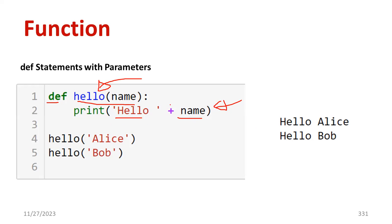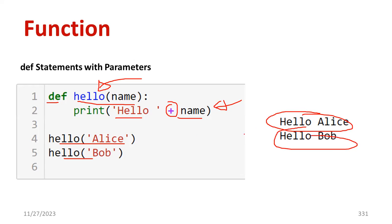That means the name is going to be concatenated with 'hello' using the plus operator. For example, if you call hello('Alice'), the output is 'hello Alice'; if you call hello('Bob'), the output is 'hello Bob'. Whatever name you type will be concatenated with 'hello'.